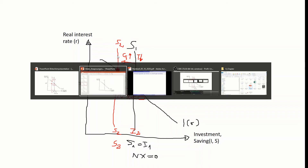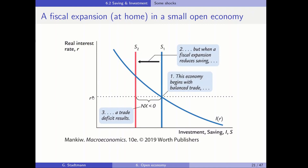Let's verify this with the textbook graph. Initially, the world interest rate is at R-star and saving equals investment in the blue situation. After the fiscal expansion, the saving function shifts to the left, saving decreases while investment stays at the former level. The difference is covered by NX, which becomes negative because investment is larger than savings. So an increase in government spending or a decrease in taxes leads to a trade balance deficit.